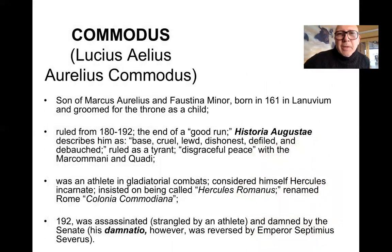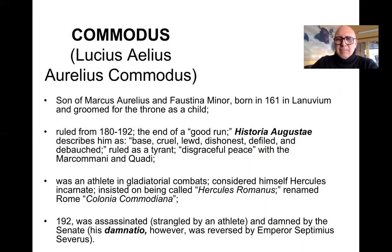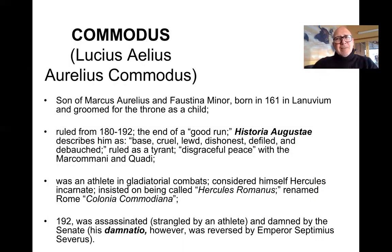As I mentioned, Marcus Aurelius and Faustina the Younger had a son who would be the next emperor — the last of the Antonine emperors. He was born in 161 in Lanuvium and groomed for the throne from his infancy. He ruled 12 years, from 180 to 192, and one could argue his reign was the end of a good run. The Historia Augustae, written much later, describes him as base, cruel, lewd, dishonest, defiled, and debauched. It tells us he ruled as a tyrant and earned a disgraceful peace with the Marcomanni and Quadi — Germanic tribes. Again, take these accounts with a grain of salt, but if you want to put him in the camp of good emperors versus bad, Commodus is in the camp of the bad emperors.